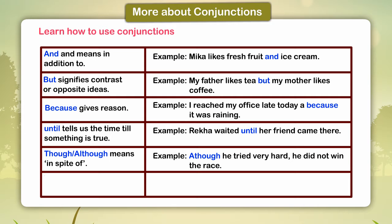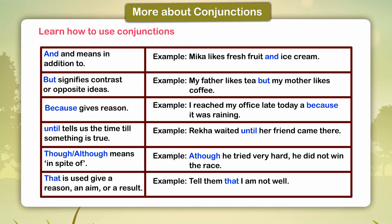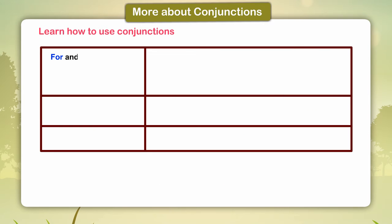he did not win the race. 'That' is used to give a reason, an aim, or a result. Example: Tell them that I am not well. 'For' and 'since' are also used to give reasons.